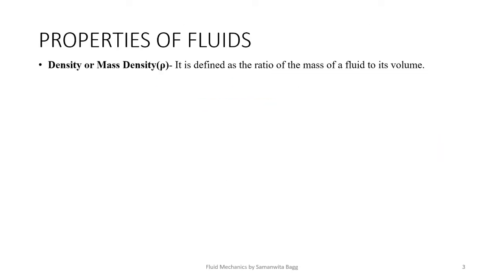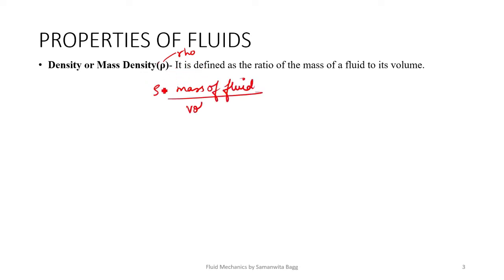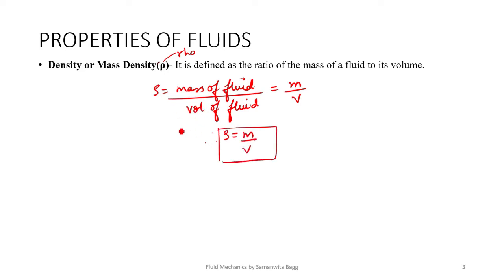Now let's start with the properties of fluids, that is liquids and gases. The first property is called density or mass density, indicated by the symbol rho — a Greek symbol. It is defined as the ratio of mass of fluid to its volume, so rho equals mass of fluid divided by volume of fluid. Using symbol m for mass and v for volume, rho is m by v. The unit of rho is kg per meter cube in the SI system, or gram per centimeter cube.